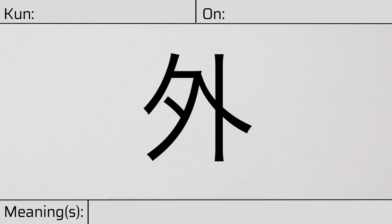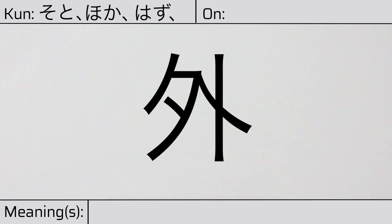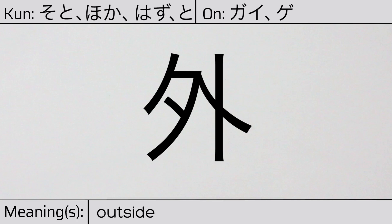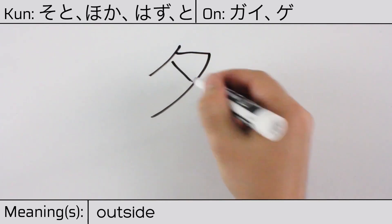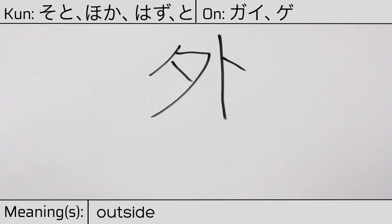Welcome to this lesson on Japanese kanji. Today, we'll be discussing this character. This kanji has kunyomi or Japanese readings of soto, hoka, hazu, or to, and it has onyomi or Chinese readings of gai or ge. This character has the meaning outside. Here is the stroke order. This character is made up of the following radicals or parts.